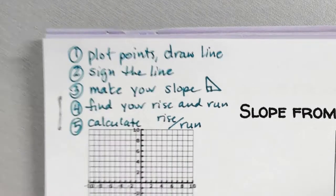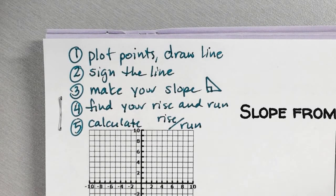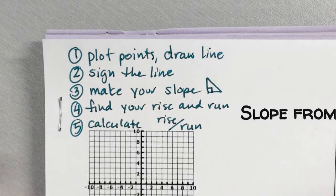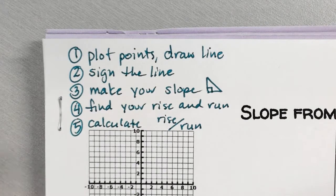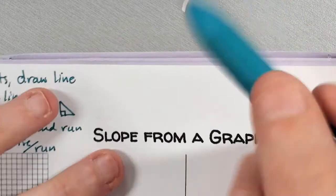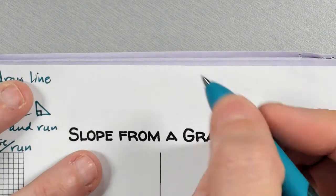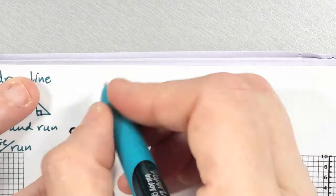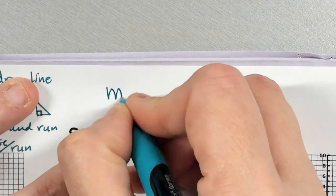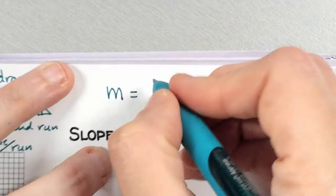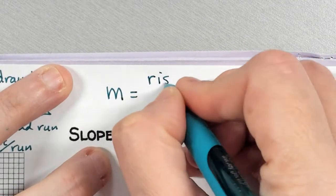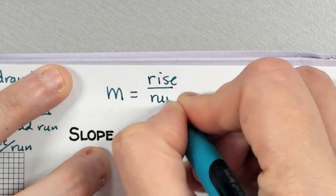Take a minute to write that down if you have not done so already. So I'm going to show you what this looks like. First thing I want to do is talk about slope from a graph. M, which means slope, we find it with rise over run.